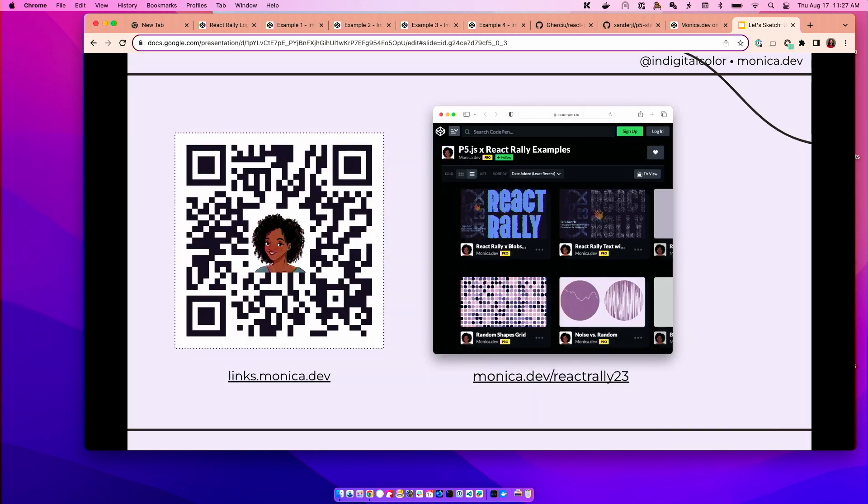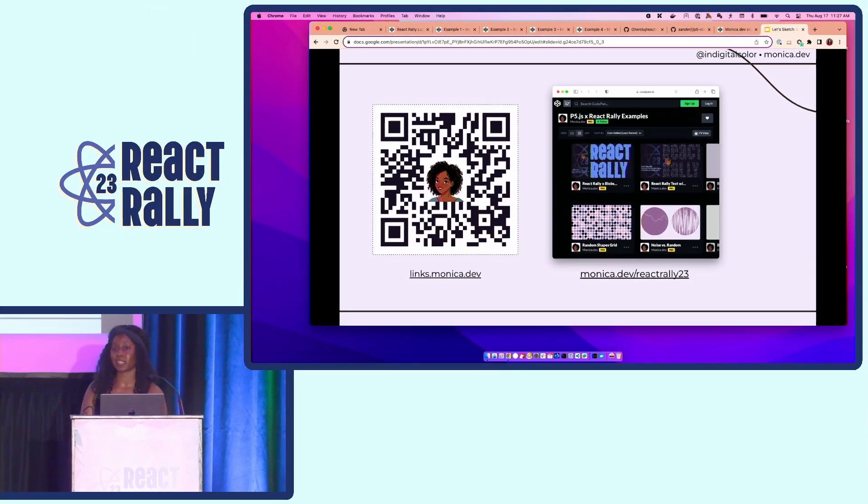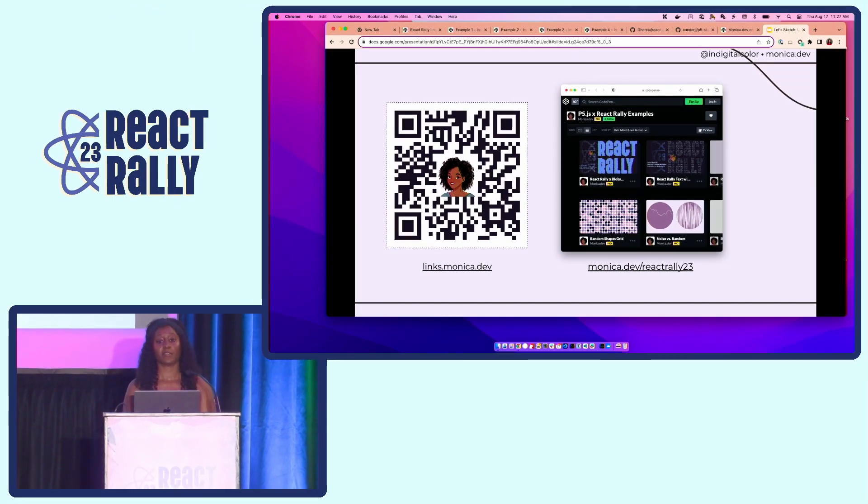If you are interested in seeing more of the examples that I shared during this presentation, then you can go to Monica.dev slash React Rally 23, and all of that stuff is on CodePen, so you can see the full code. And then I also have links.monica.dev, which will link to those examples, but I also have other p5.js examples that you may find of interest.